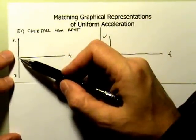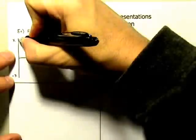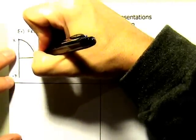...then essentially what we would need to do is drop the object here and the shape of the graph would look something like this.